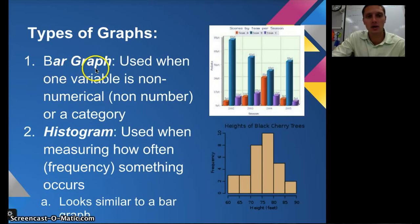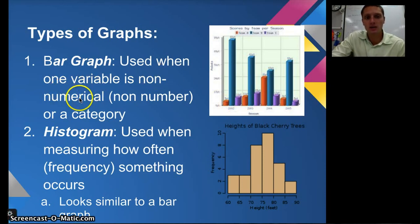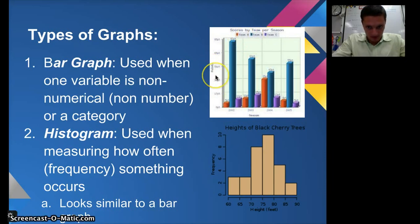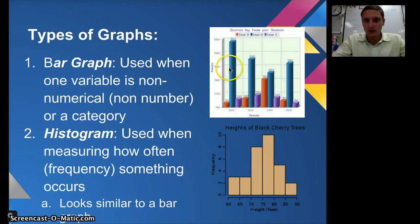The first type we're going to talk about is a bar graph, which is probably one you've seen before. We use this when one variable is not a number — it's non-numerical or some sort of category. In our example, we have three teams A, B, and C, and we're looking at the number of points per season. The season years 2002 through 2005 are the category on the x-axis.